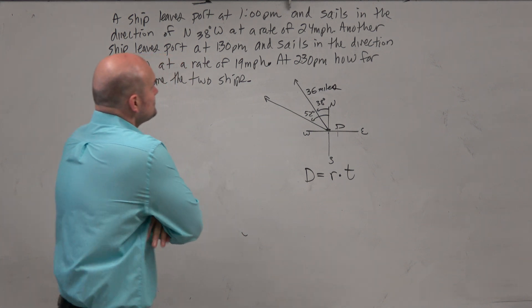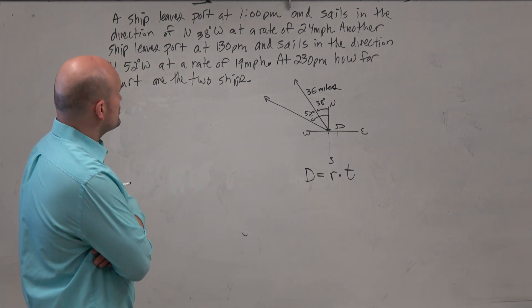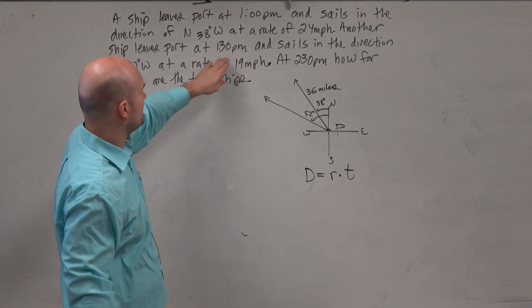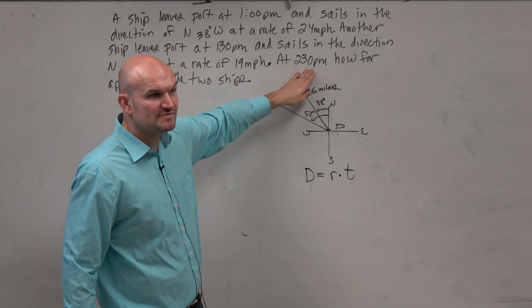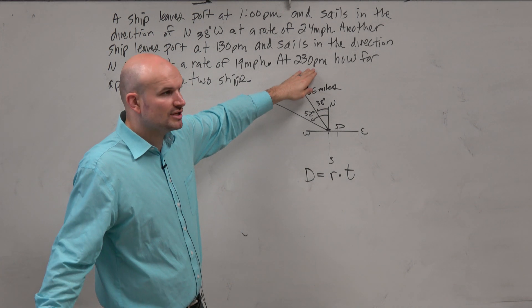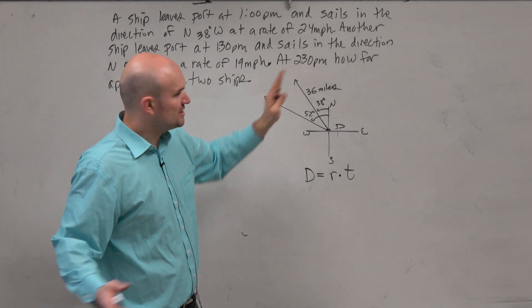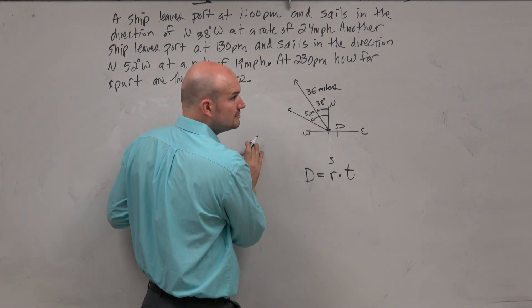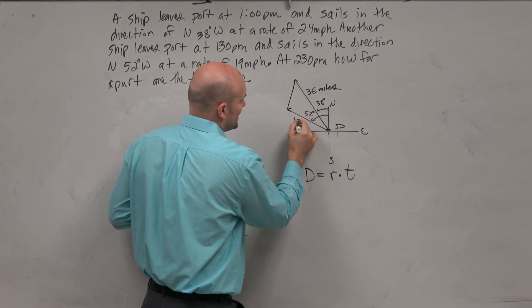The next problem is traveling only at 19 miles per hour, and this one leaves at 1:30, so an hour later, so it only travels for an hour. So that's only going to be 19 miles, right? So to kind of make my picture look a little bit better, I'm going to kind of like shorten that a little bit, okay, and say that's going to be 19.